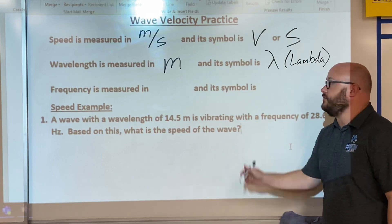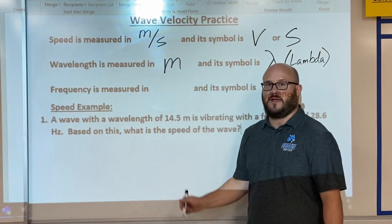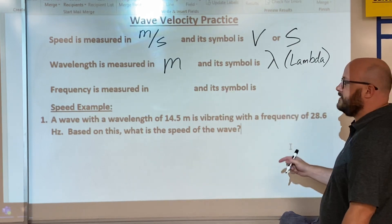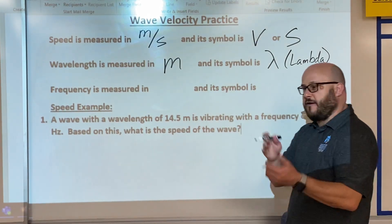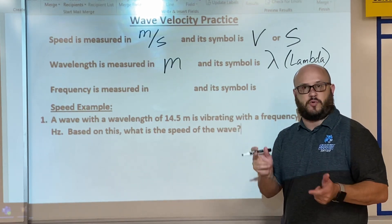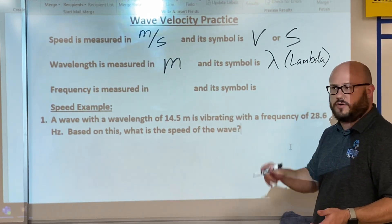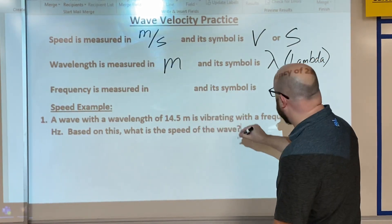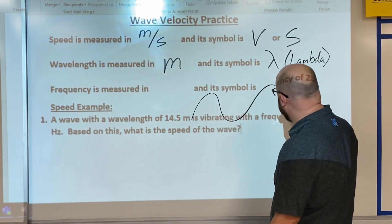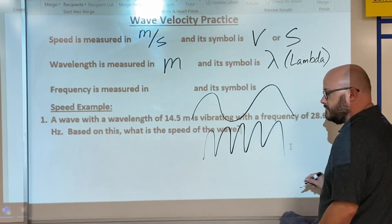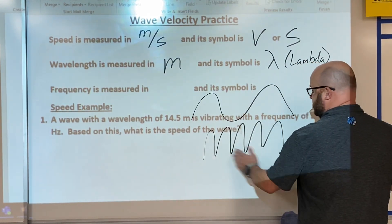And lastly frequency. Frequency is how many times the wave passes a certain point in a given reference of time. So if you're looking at a wave on paper, this is low frequency, this is high frequency. You've got more wavelengths in that particular time than you do this way.